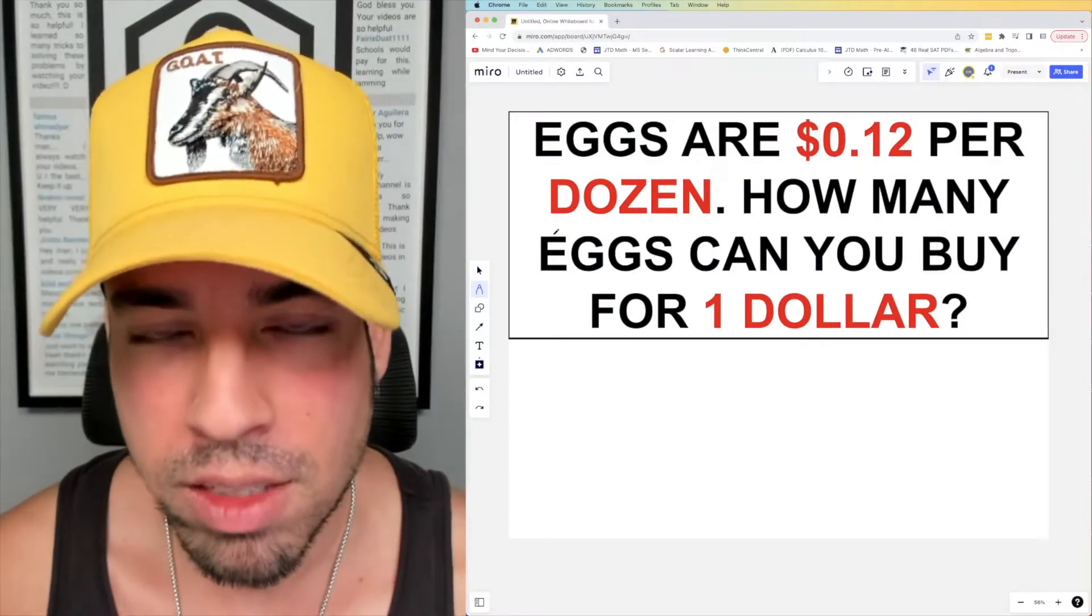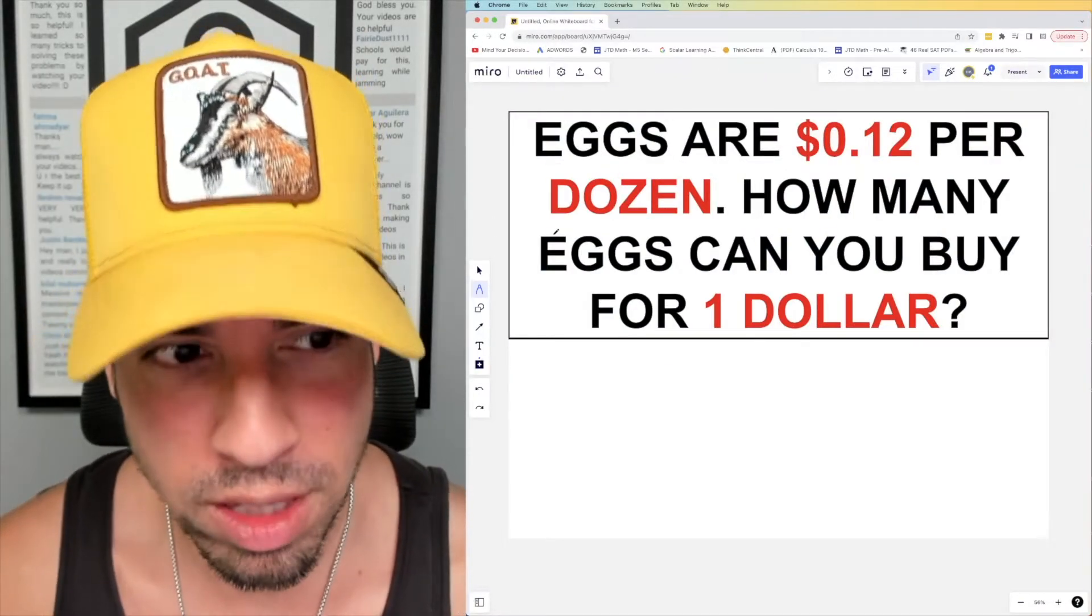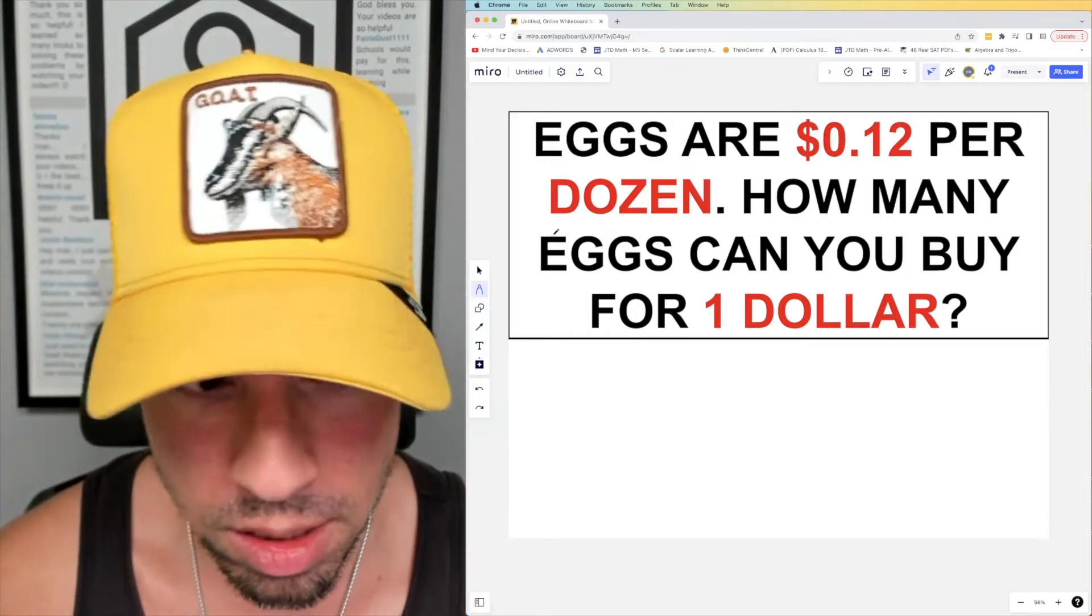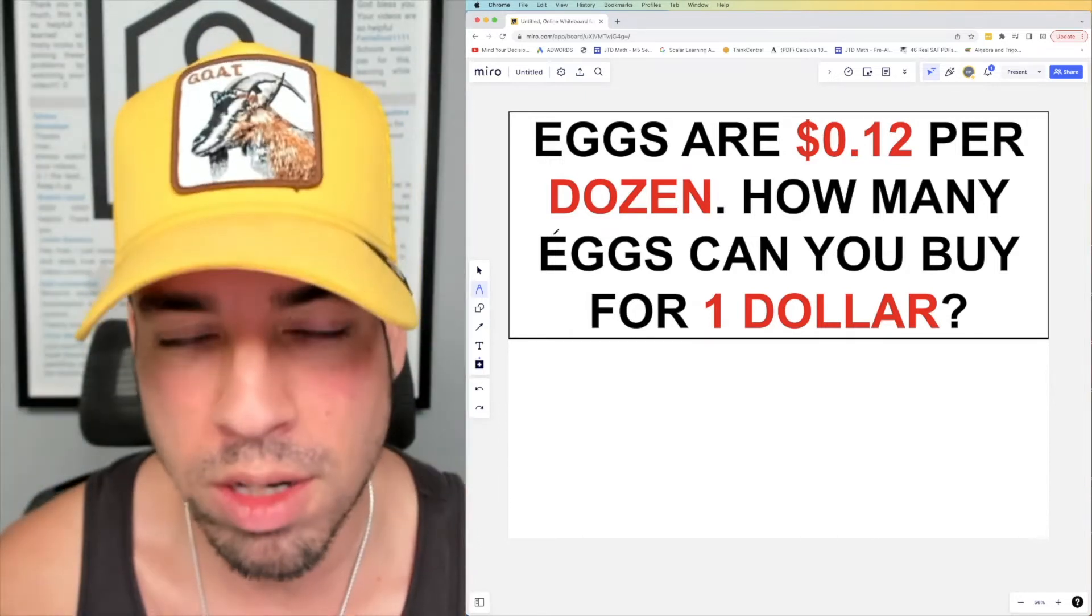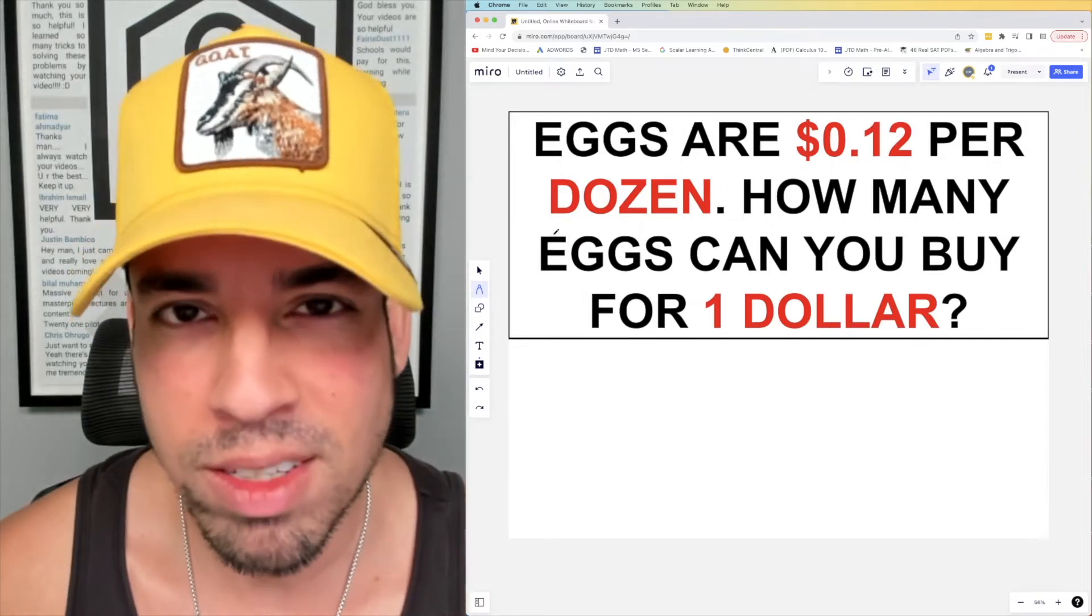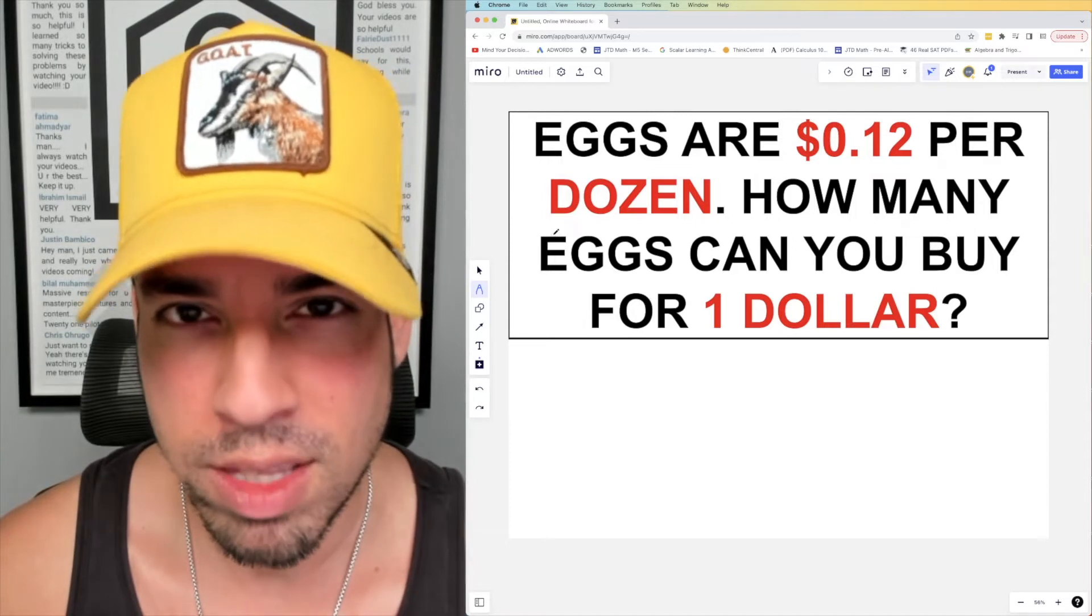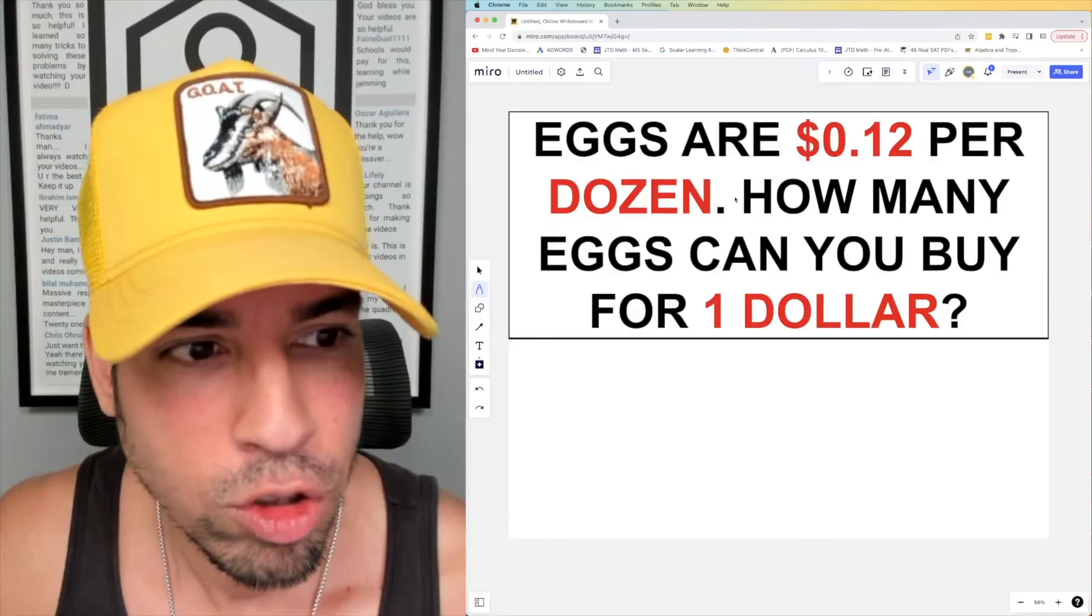What's up everybody and welcome back to another math puzzle. In this one, the question is as follows: eggs are 12 cents per dozen. How many eggs can you buy for one dollar? Hit that pause button and see if you can figure it out. When you're ready, hit play and I'll give you the explanation.